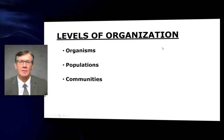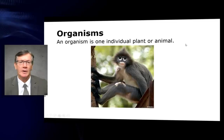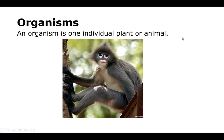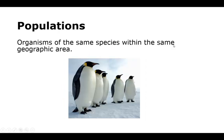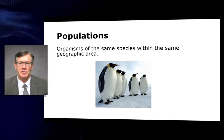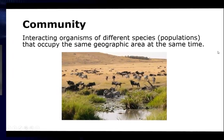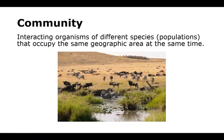Levels of organization: organisms, populations, communities. An organism is one individual plant or animal. Organisms of the same species within the same geographic area are called populations — they are populations of one species. A community consists of interacting organisms of different species or populations that occupy the same geographic area at the same time.